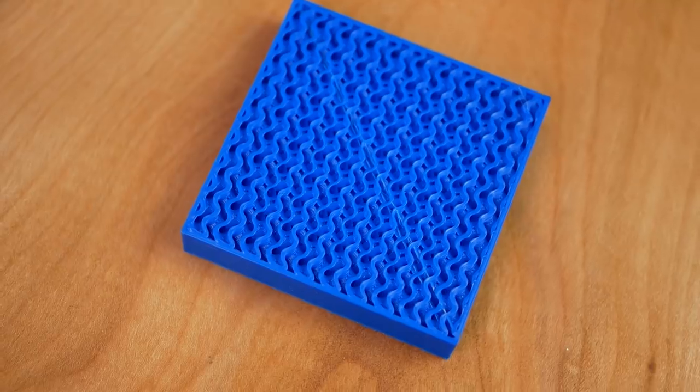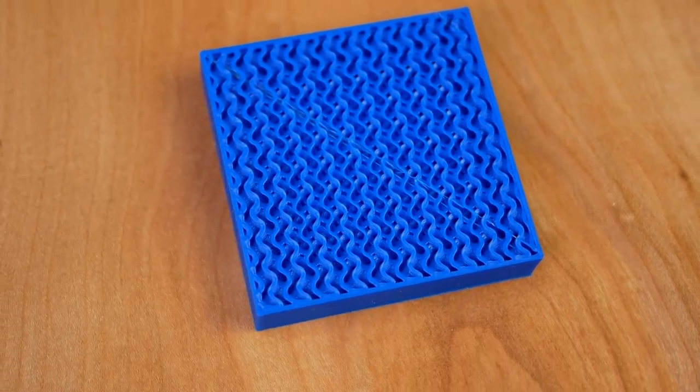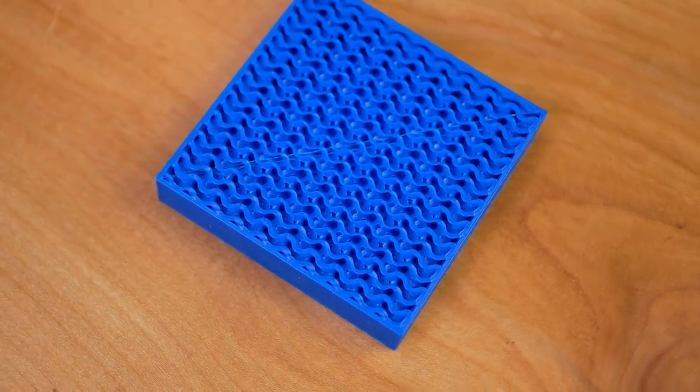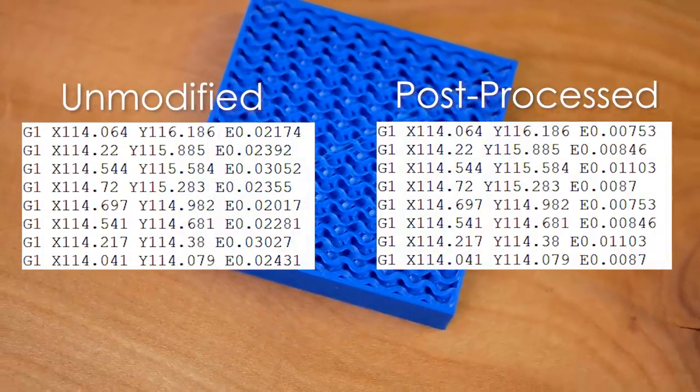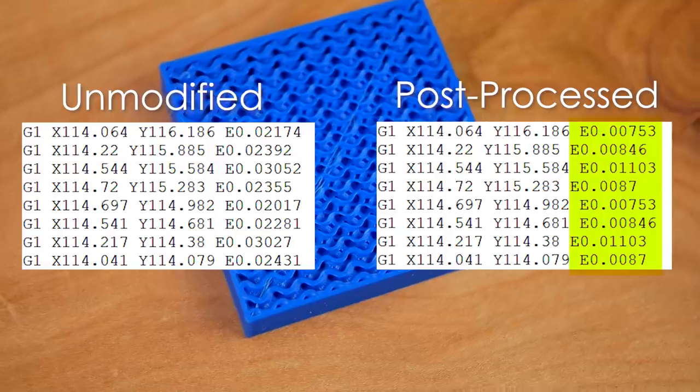I defined a maximum and minimum extrusion multiplier as well as a gradient thickness. If the distance is within the gradient thickness I just interpolate between the min and max value, if it's bigger I use the minimum value. In my tests I mostly use the range from 300 to 50 or even 0% and the gradient thickness of 3 to 10mm. With this method, I basically ended up with the same gcode file in the end, only the extrusion amounts are slightly adjusted for the infill.